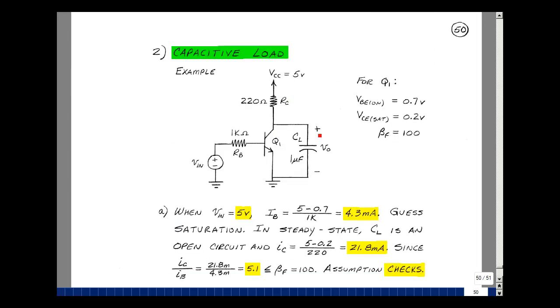Let's switch a capacitive load, put it across the collector emitter. I put a 1 microfarad capacitor here. Suppose that at T equals T0 plus, I apply 5 volts here. Current's going to flow of 5 volts minus 0.7 divided by 1k, again 4.3 milliamps. Let's assume that the output saturates. Eventually in steady state, this capacitor will become an open circuit, so the current is 5 volts minus 0.2 divided by 220 ohms, or about 21.8 milliamps. The ratio with the base current is 5.1, our assumption that we were saturated checks.